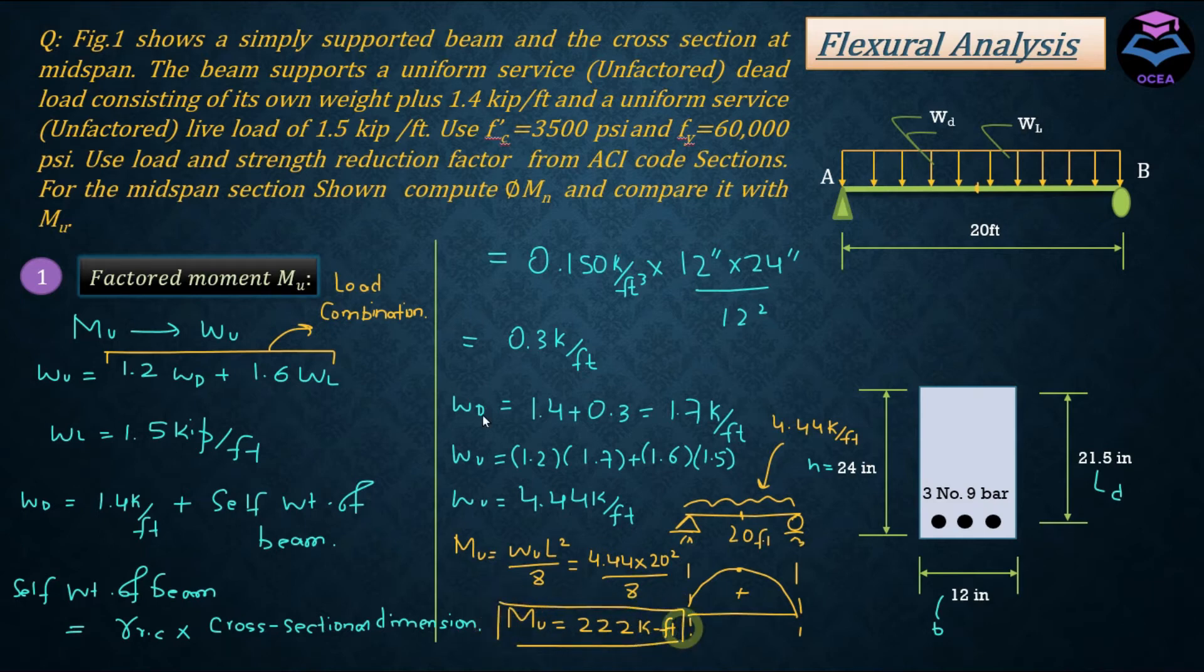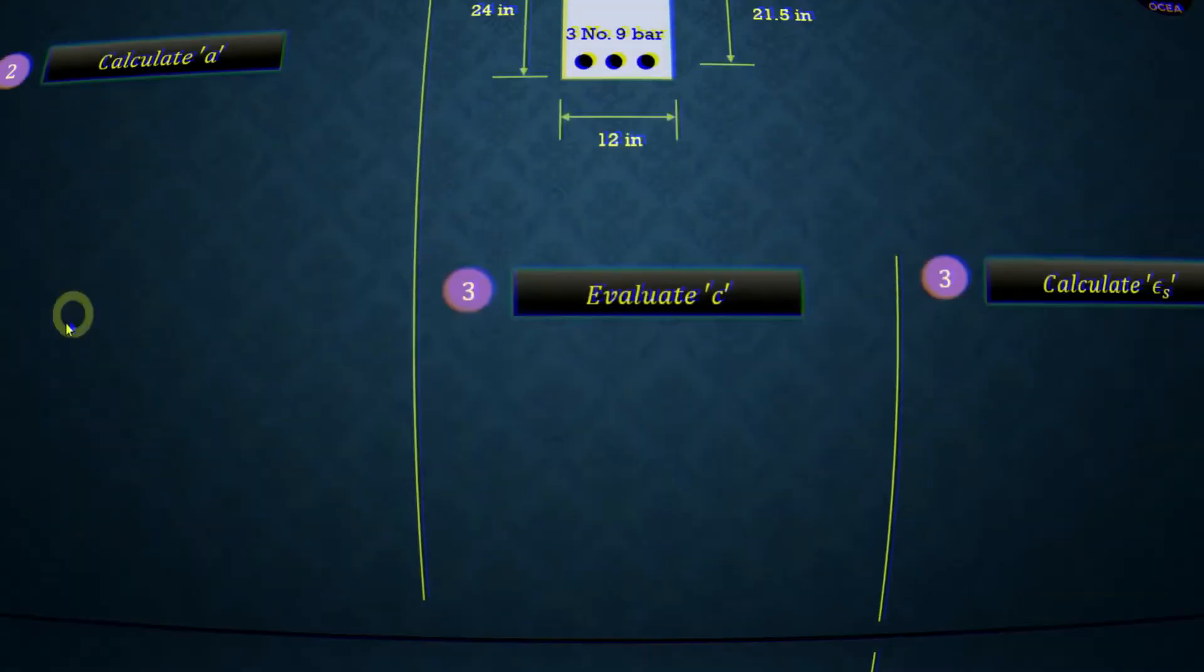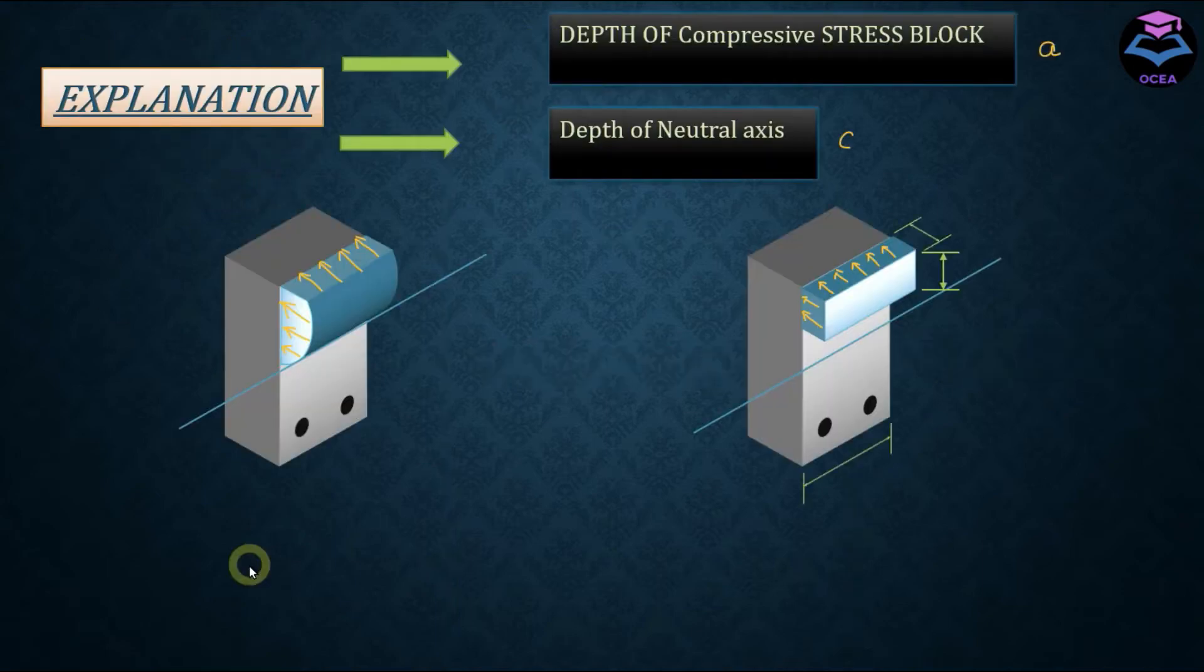Now I'm going to calculate the resistance provided by the cross-section at the midspan of the beam. To do that I'm going to follow these steps here. Let's apply these steps. The second step is to calculate the value of A, that is the depth of compressive stress block. According to latest ACI code, the strength design method is based on failure strength limits.